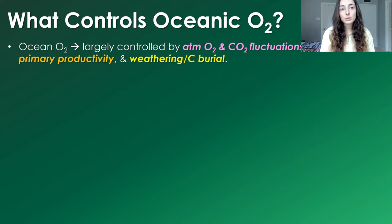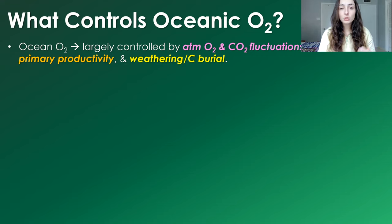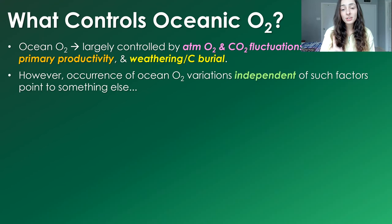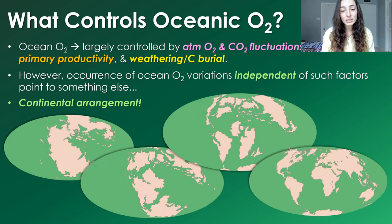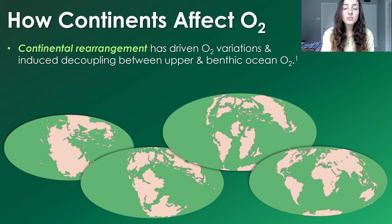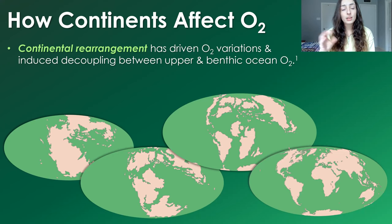This cycle has always been considered the major reason why we have big spikes and dips in oxygen and carbon throughout Earth's history, causing major climate changes when the cycle is thrown off balance. However, there are occurrences in the rock record in which ocean oxygen concentrations varied independently of these factors, pointing to something else. Continental rearrangements have driven oxygen variations in Earth's past and have induced decoupling between the upper and benthic ocean oxygen — the surface and the subsurface oxygen.